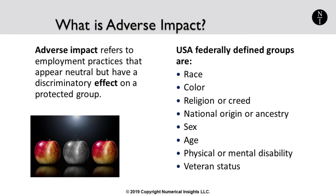Adverse impact in human resources refers to employment practices that can appear neutral but can discriminate against a subsegment or group of employees. In the U.S., the federal government has defined a list of protected groups against which a company cannot discriminate — for example, a particular race, sex, or age. It's quite possible to occasionally discriminate against a group accidentally in HR processes, which is why there are mathematical tests that HR and legal departments can perform to ensure processes aren't discriminatory.